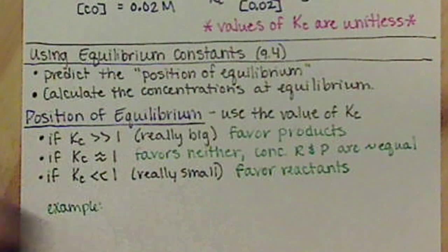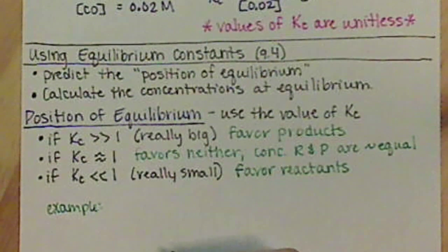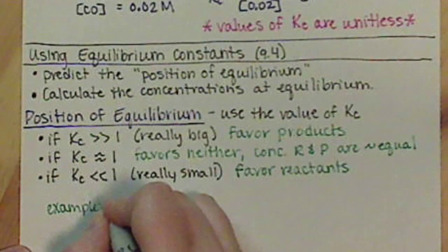So if we look at an example, we're going to be given some Kc values. Basically, will the reactants or the products be favored?